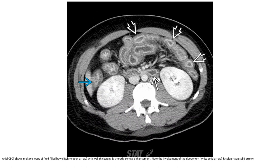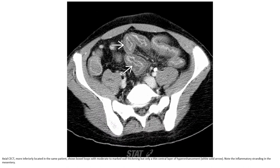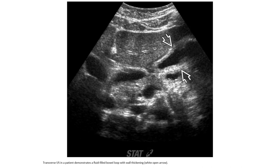Contrast-enhanced CT shows multiple loops with fluid-filled bowel, wall thickening, and smooth submucosal enhancement. Note the involvement of the duodenum and colon. More inferiorly in the same patient, bowel loops show moderate to mild wall thickening but only a thin central layer of hyper-enhancement. Note the inflammatory stranding in the mesentery. Transabdominal ultrasound in a patient demonstrates a fluid-filled bowel loop with thickened wall.